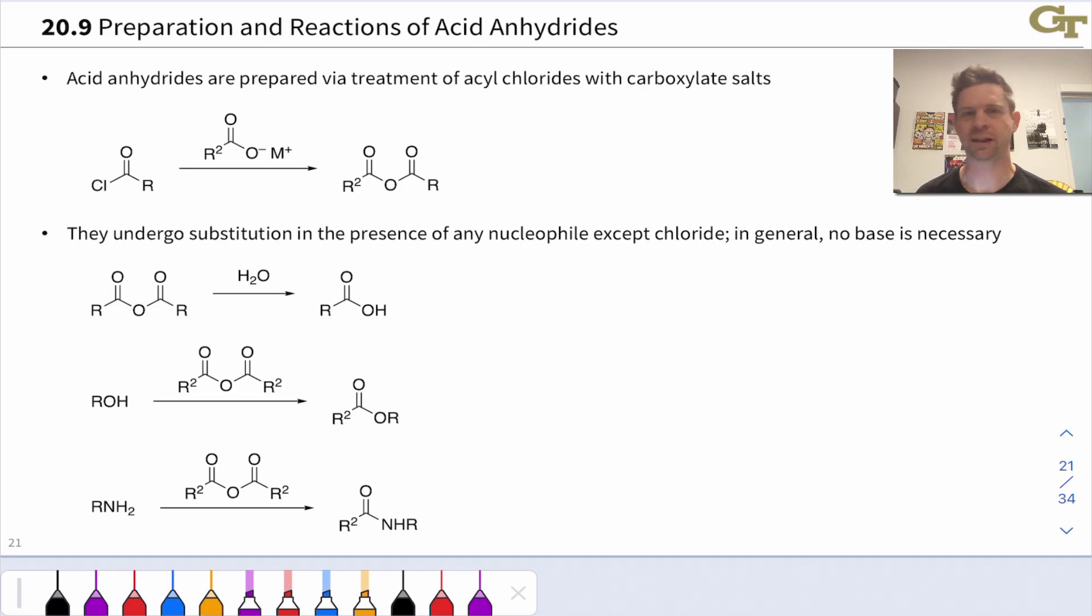Acid anhydrides, which we'll often just call anhydrides for short, tend to be some of the trickiest carboxylic acid derivatives in my experience because the two carbonyl groups built into these reagents tend to throw people off. I remember being a student in sophomore organic many years ago and being thrown off by these carboxylic acid derivatives.